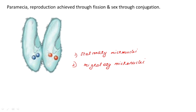The migratory micronucleus present in each paramecium moves to its counterpart through the cytoplasmic channel. By this exchange, mixing up of genetic material is happening between the two paramecia.